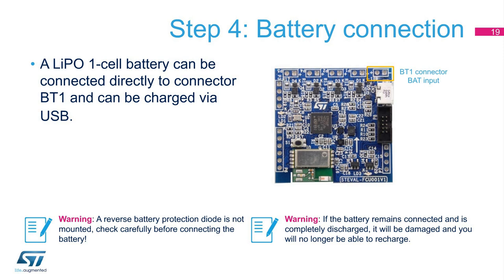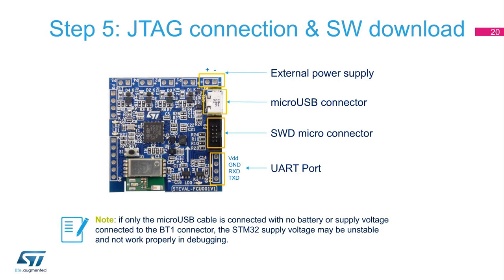To download and debug the firmware on the STM32F401 MCU, a JTAG with a micro-connector SWD should be connected and voltage should be supplied to the board using a 1S LiPo battery. The following steps must be achieved: 1. Connect a 1-cell battery or 3.7V supply by external power supply. 2. Connect the micro-USB cable to avoid discharging the battery. 3. Connect the cable for ST-Link V2 to the SWD micro-connector. 4. Optionally, the UART can be used for debug and data logging.